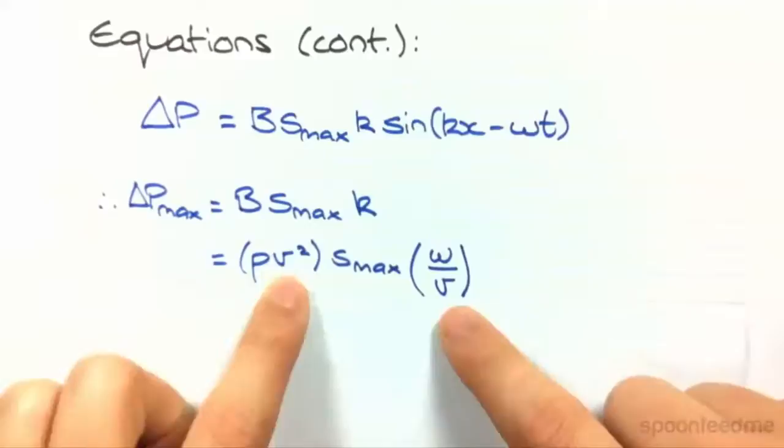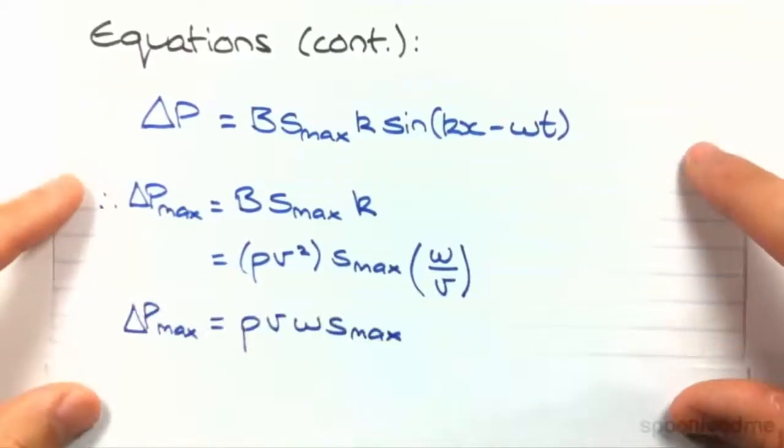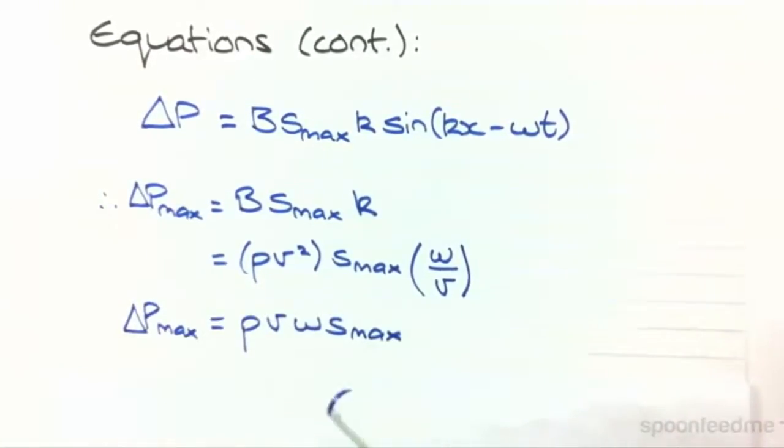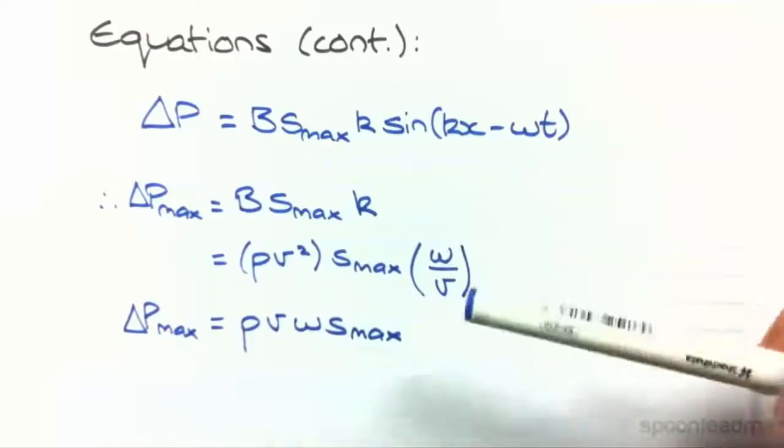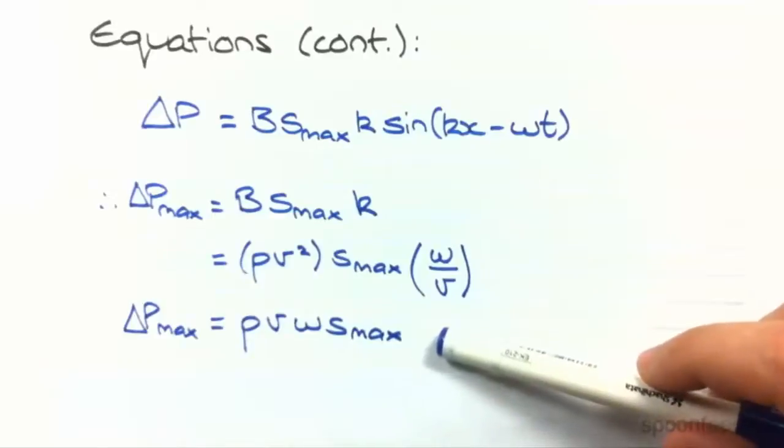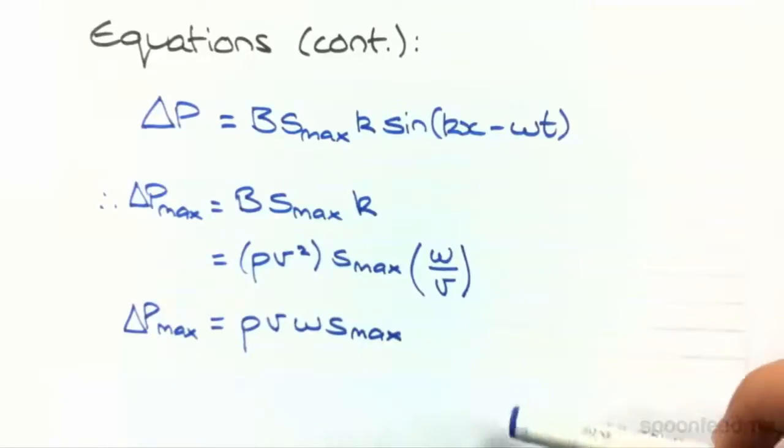Alright, and we've got V squared over V there. So we end up with the difference in pressure max equals ρVωS. Yeah, and that is actually on your formula sheet. And it's how we find the amplitude of changes in pressure for a sound wave moving through a medium.